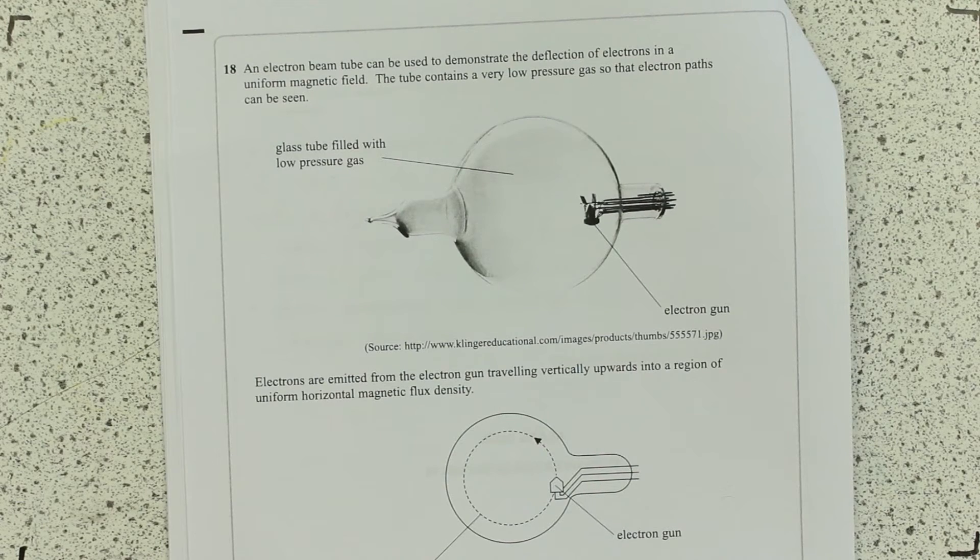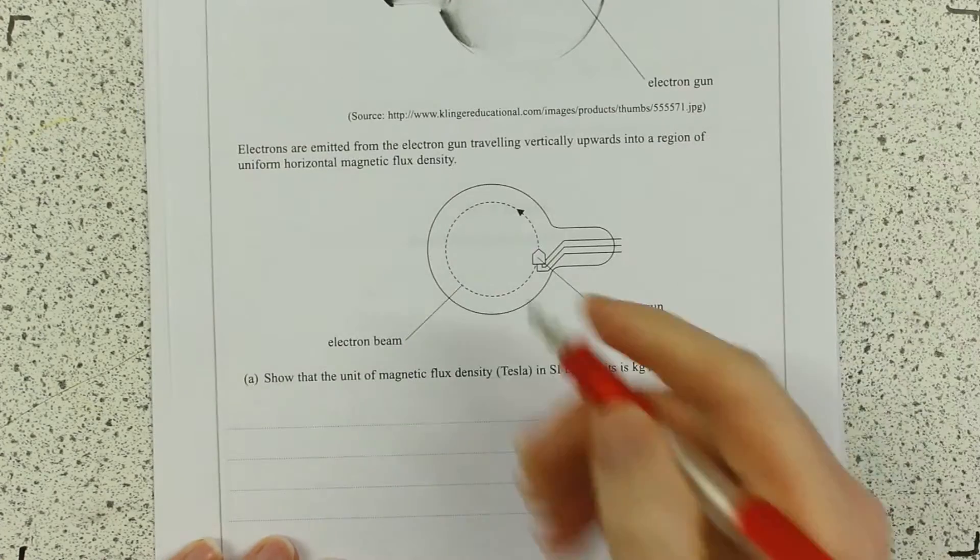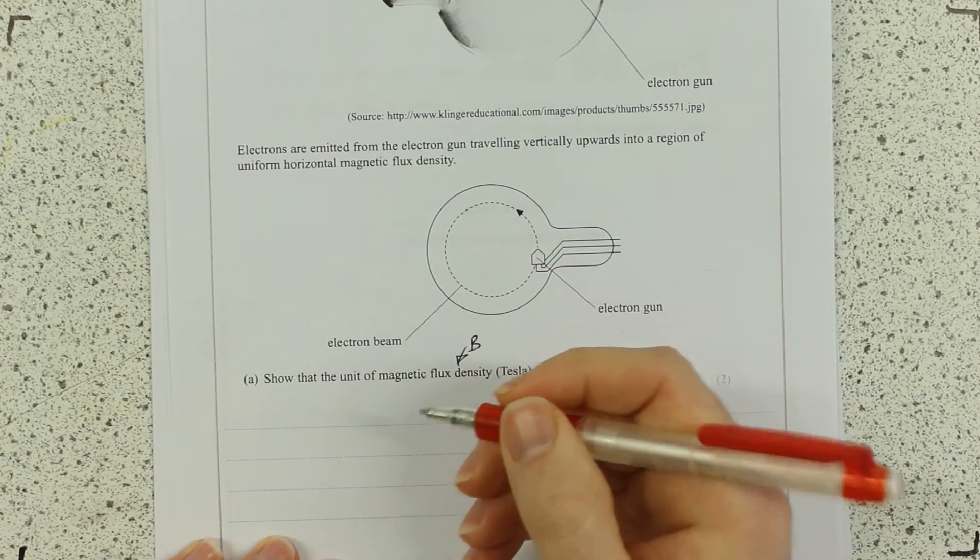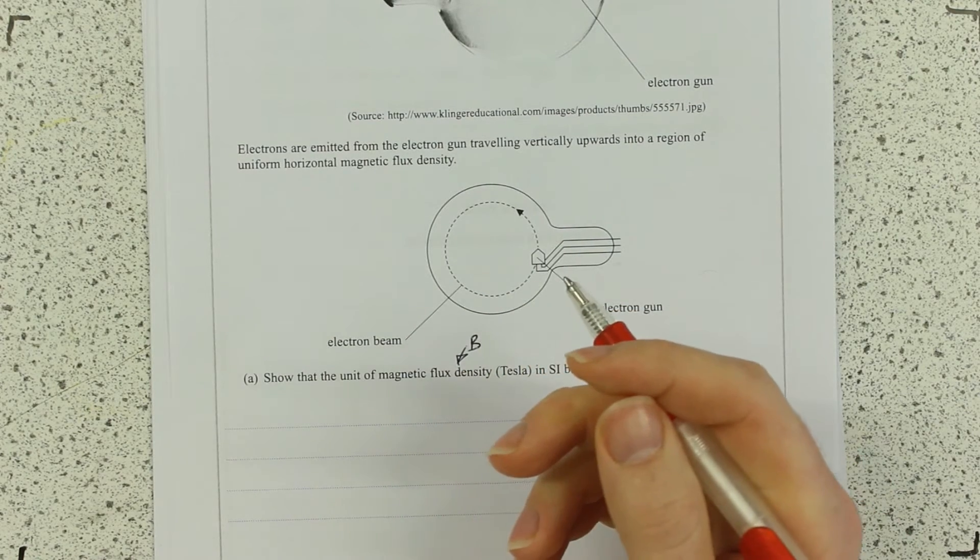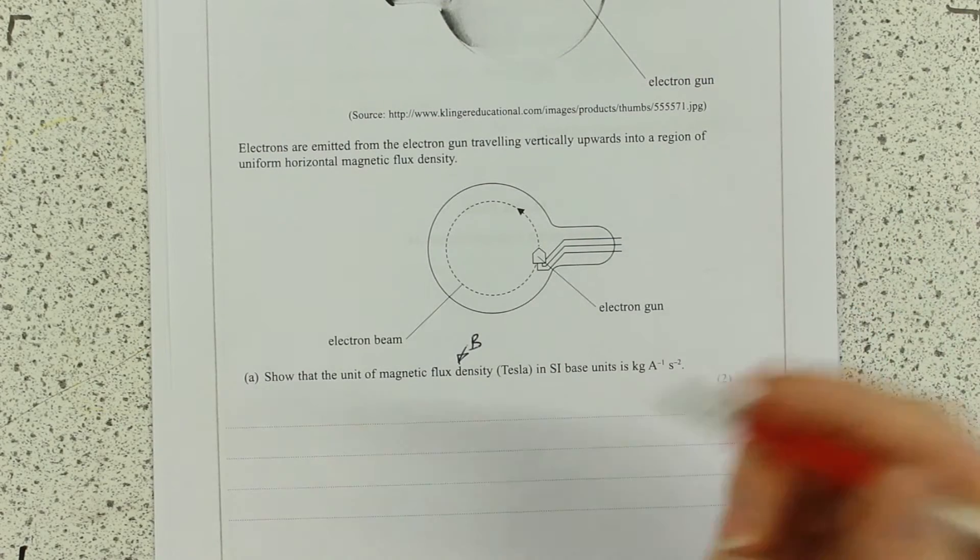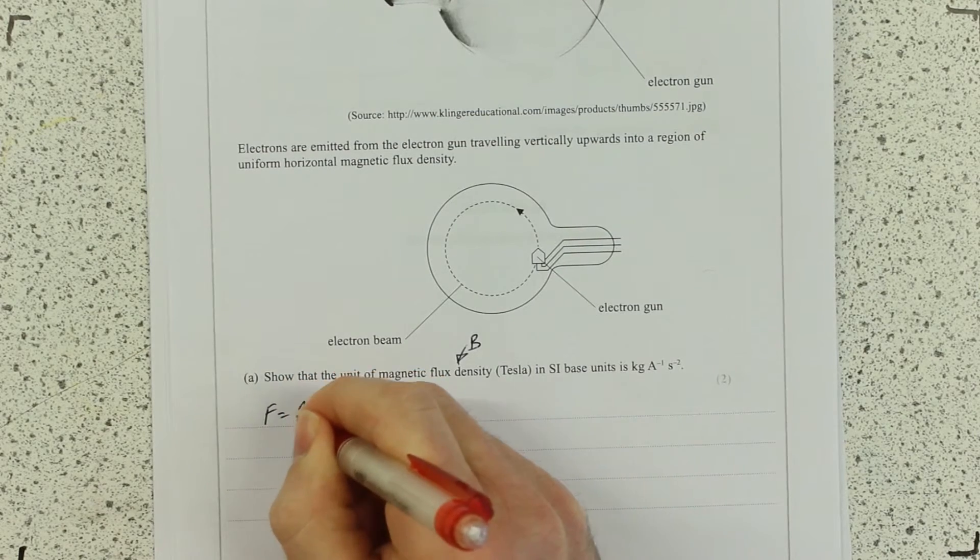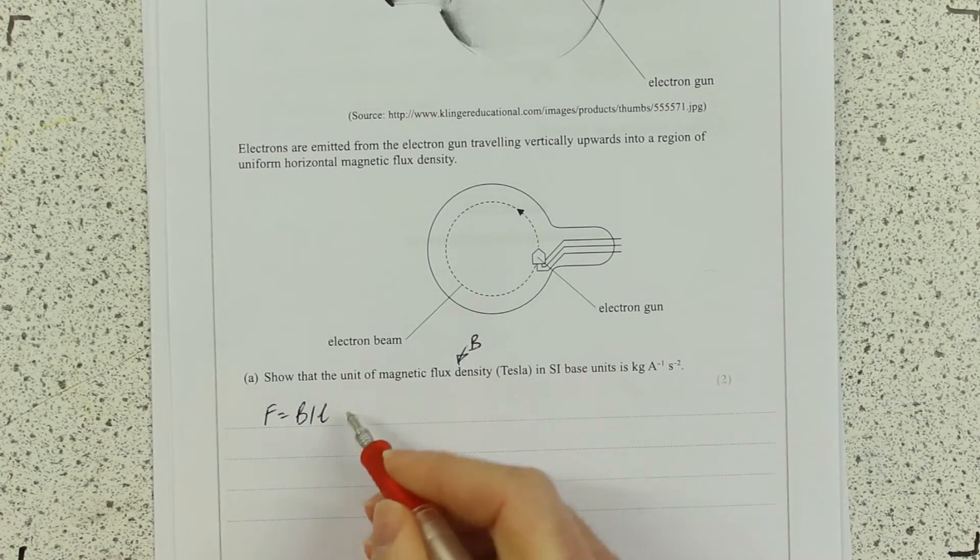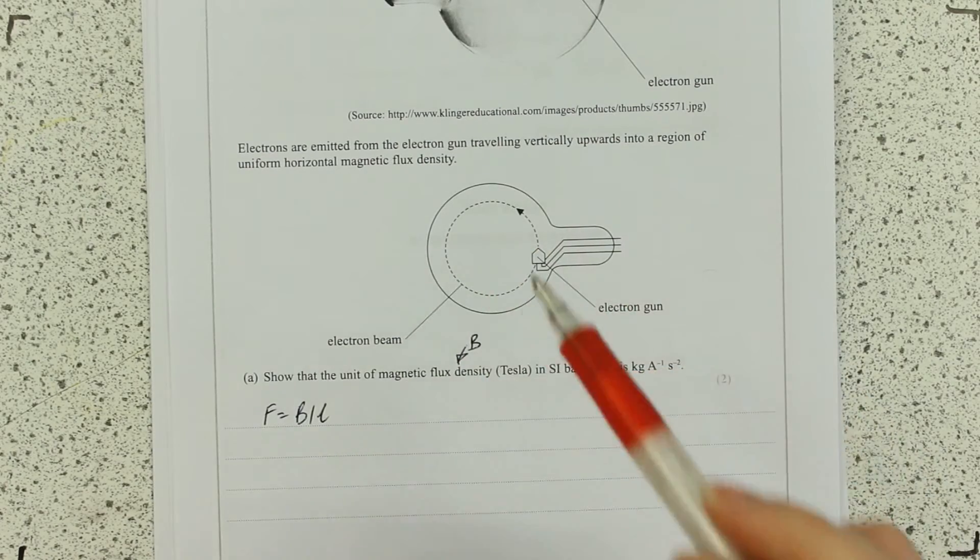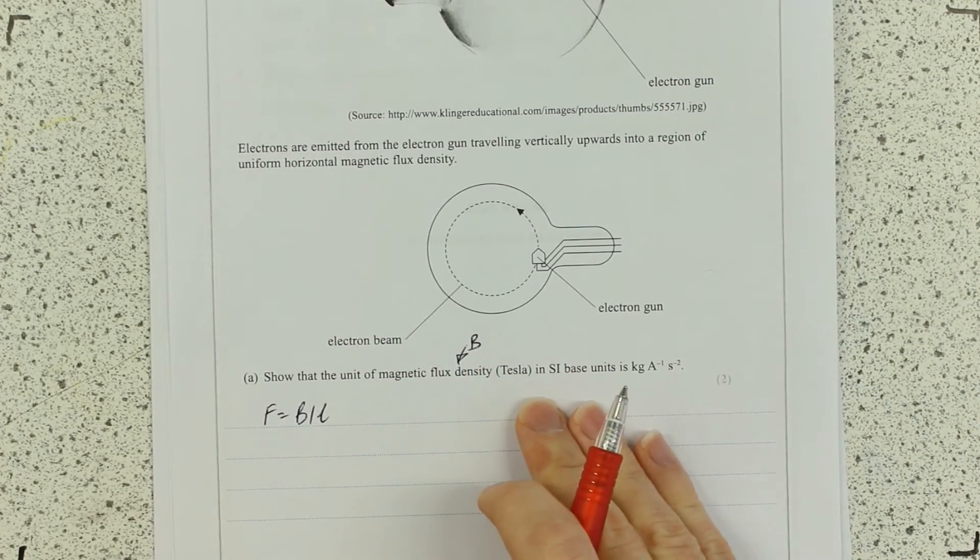Show the unit of mag flux density in Tesla in SI-based units. Mag flux density is B in your formula sheet. You can go to any of your equations in the formula sheet with B in it and work down into SI-units. I think the simplest one is going to be F equals B-I-L. We're talking about horizontally, so sine of 90 is 1 and that's dimensionless anyway.